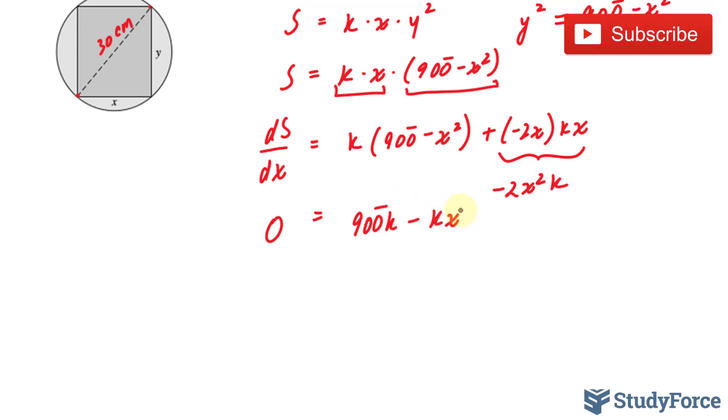900k minus kx squared minus 2x squared k. These two terms are alike. And I'll combine them. It becomes negative 3kx squared.